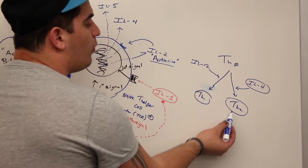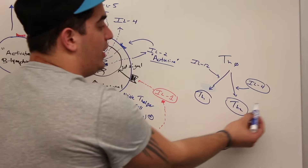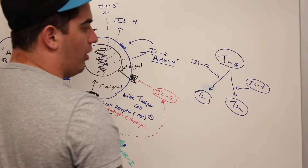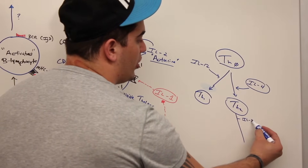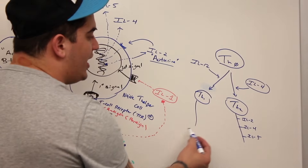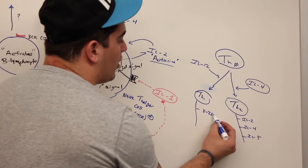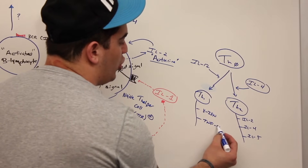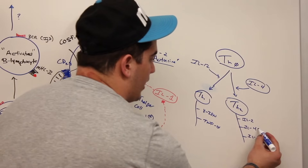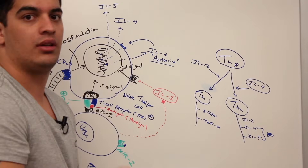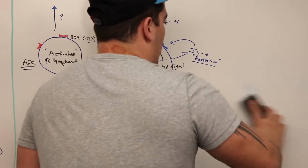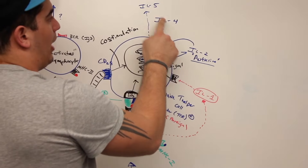We want to make T helper 2, so we need interleukin-4 stimulation. This naive T cell turns into a T helper 2 cell, with genes activated for interleukin-2, interleukin-4, and interleukin-5. If we activated T helper 1, we would activate gamma interferon genes and tumor necrotic factor alpha genes. So now we've produced interleukin-4 and interleukin-5.